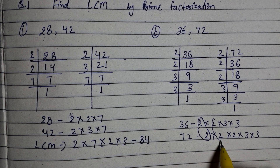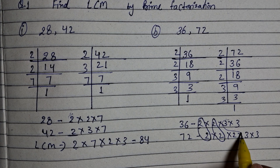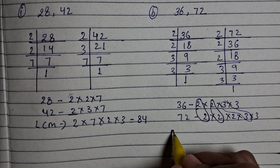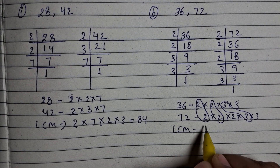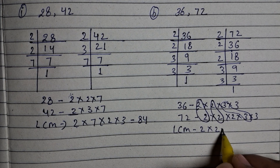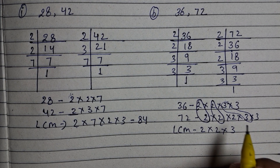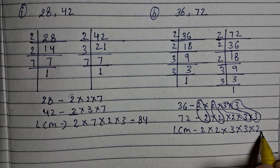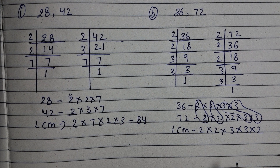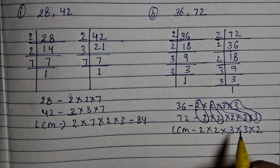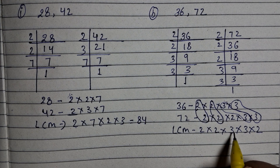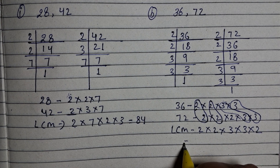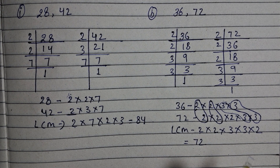Now we pair them up. One pair of 2 is made, another pair of 2 is made, one pair of 3 is made, and another pair of 3 is made. We write the pairs: 2, 2, 3, 3. The single unpaired 2 from 72 is also written. Multiply: 2 × 2 = 4, 4 × 3 = 12, 12 × 3 = 36, 36 × 2 = 72. So LCM is 72.